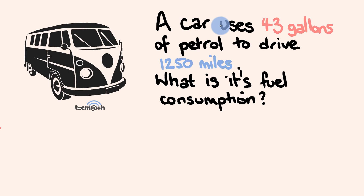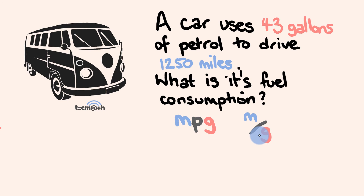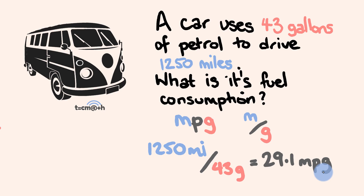Now let's look at miles per gallon. A car uses 43 gallons of petrol to drive 1,250 miles. What is its fuel consumption? We've got miles and we're using gallons, so our fuel consumption is going to be in miles per gallon. Think of 'per' as meaning divided by — miles divided by the number of gallons. So we have 1,250 miles divided by 43 gallons, which gives us 29.1 miles per gallon. Just treat the units you're working out as a formula and you'll be fine.